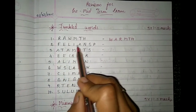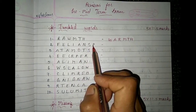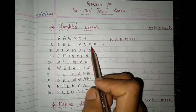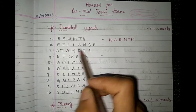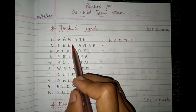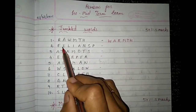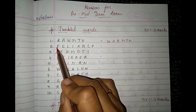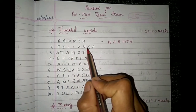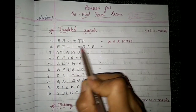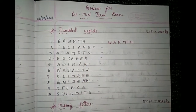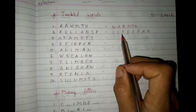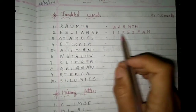Then look at this one: F-E-L-I-A-N-S-P. There is some rearrangement here. Look carefully: L-I-F-E-S-P-A-N. What does it become? Lifespan.